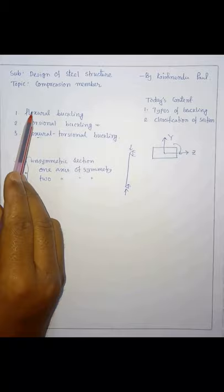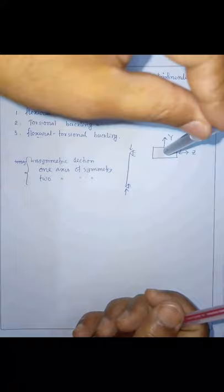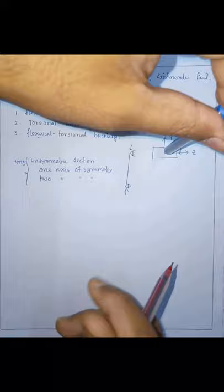Both of these behaviors — buckling about y and z — are flexural buckling. Now, if the member twists about its own longitudinal x-axis due to compression, that twisting is also buckling, and it is called torsional buckling.